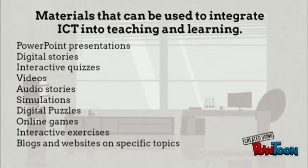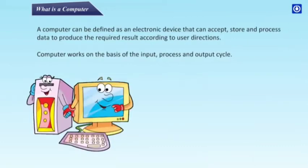What is a computer? A computer can be defined as an electronic device that can accept, store and process data to produce the required result according to user directions. A computer works on the basis of the input, process, and output cycle.